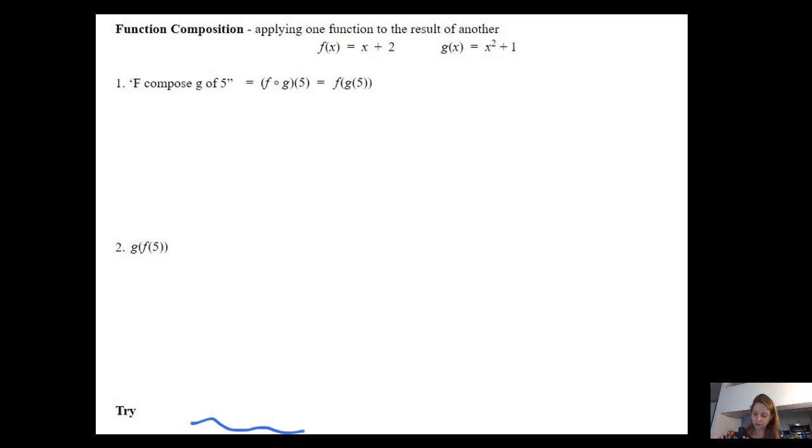So F of G of five. We're going to work from the inside out because it's really saying evaluate F, the function F, for whatever G of five is. So I'm going to evaluate G of five first. And G of five will be five squared plus one. G of five is going to be 25 plus one, which is 26.